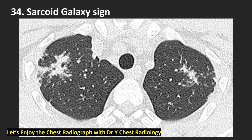This is a thin section CT, lung window setting — our case. How about this sarcoid galaxy sign? Similar to the original sign: large coalescence of micronodules with many surrounding nodules and ground glass opacity. Same on the left upper lobe — central coalescence of nodules (granulomas) with surrounding tiny daughter nodules of granulomas.